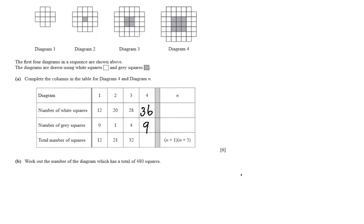That will become important later when we answer that box. The total number of squares, as you can see, 12 plus zero is 12, 20 plus one is 21, 28 plus four is 32. So we've got to do 36 plus nine. If you do that correctly, you're going to get 45.